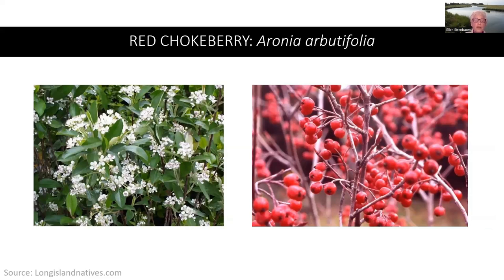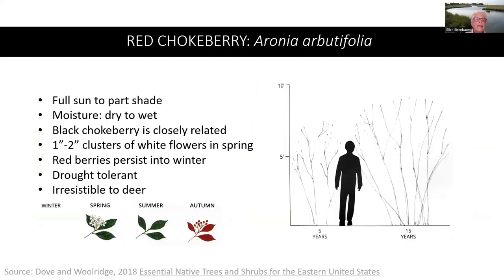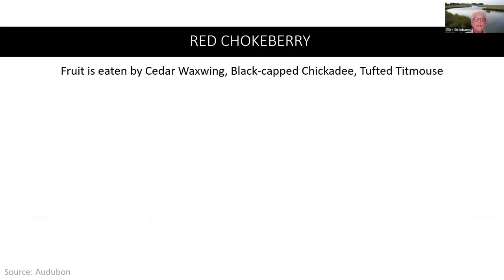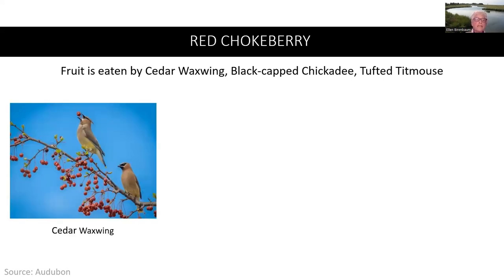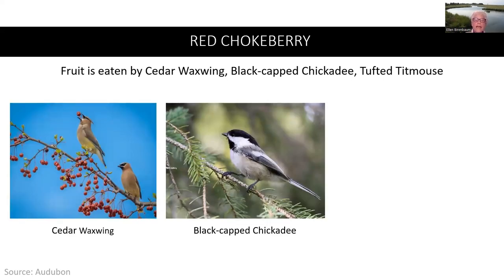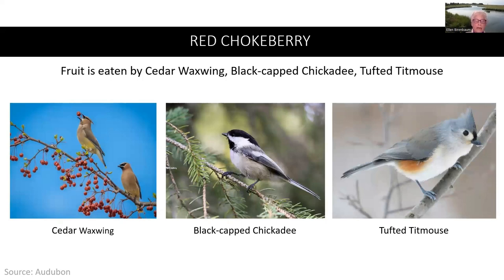The red chokeberry is an underused, medium-sized, multi-season shrub noted for its profuse white flowers, berries, superior autumn color, and colorful bark. The black chokeberry is closely related. It is drought tolerant; however, it is irresistible to deer. The fruit of the red chokeberry is eaten by the cedar waxwing, the black-capped chickadee, and the tufted titmouse.